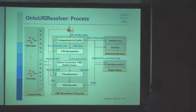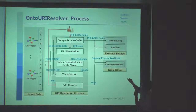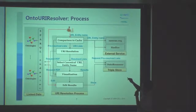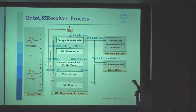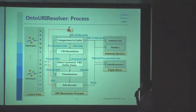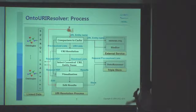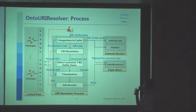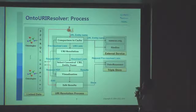This is the process flow for the URI resolver. The user can input URIs or entity names. We compare to cache — if we have a pre-existing list, the request is directed to visualization. But if there is no cache, the URI or name is input to the URI resolution process. The URI resolver group collects RGDOM via SPARQL endpoint, compares them, divides the RGDOM URIs into groups, selects canonical URIs and names using RGDOM, and then proceeds to visualization.